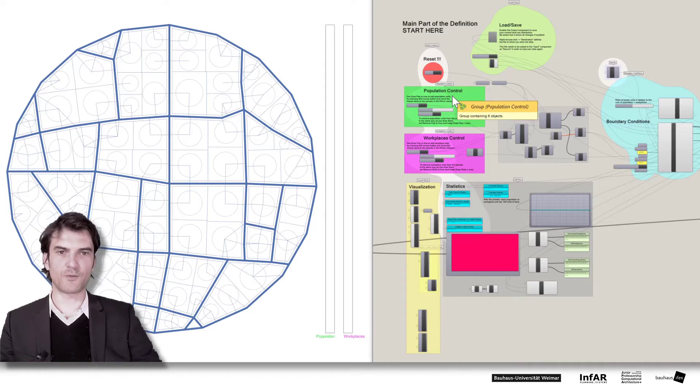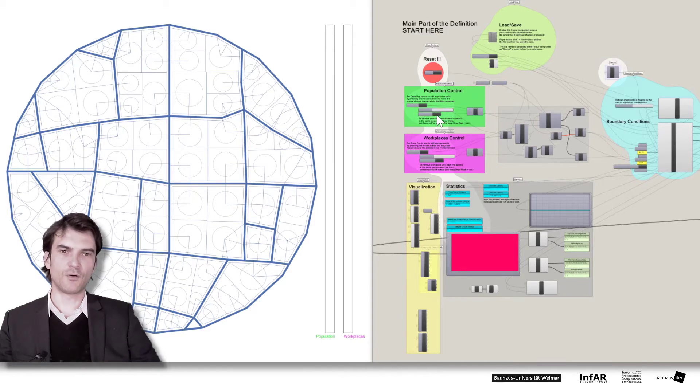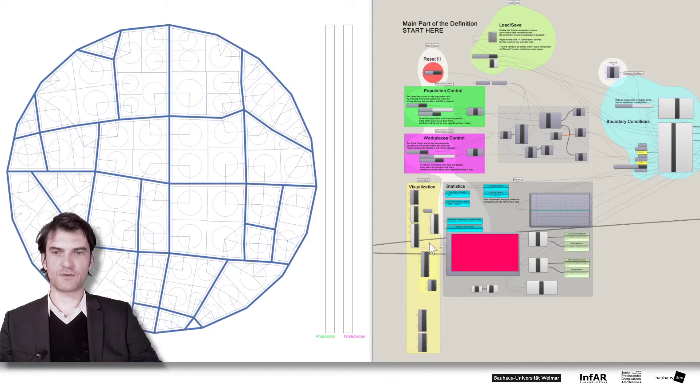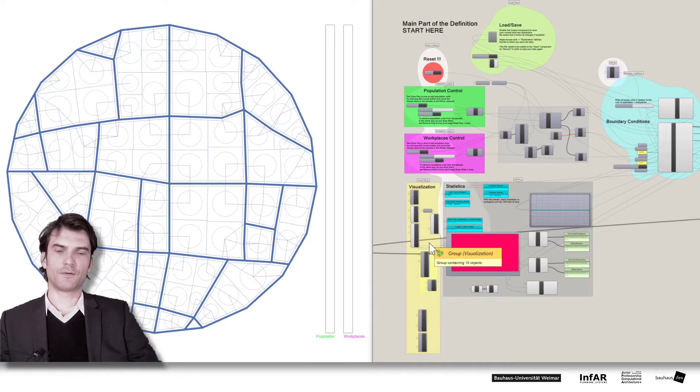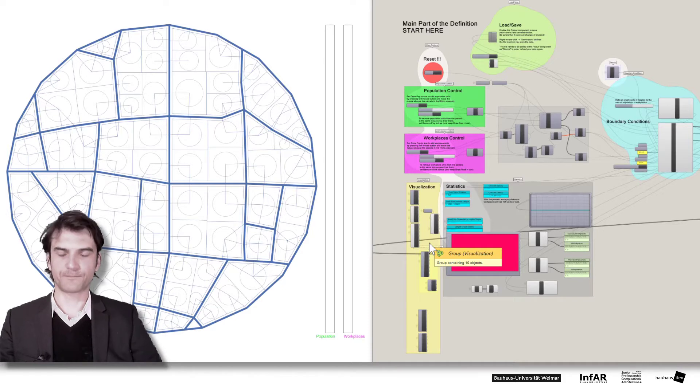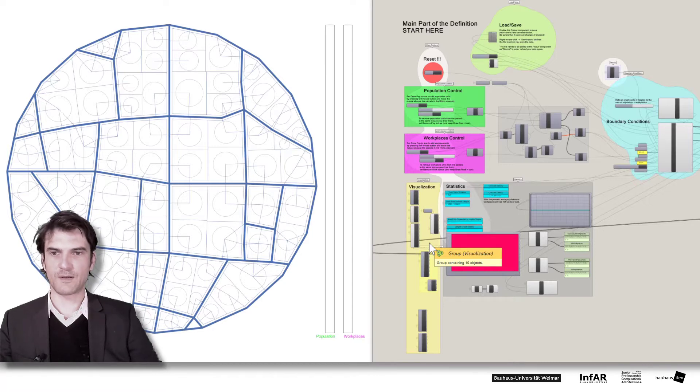Then in the green box we have the population control. Here you can draw or delete population units and the same for workplaces. At the bottom here you have the visualization components that you can turn on and turn off to see different aspects of the analysis. We will change later to the view of streets that are used a lot and the corresponding parcels. These streets will be later called the active streets.